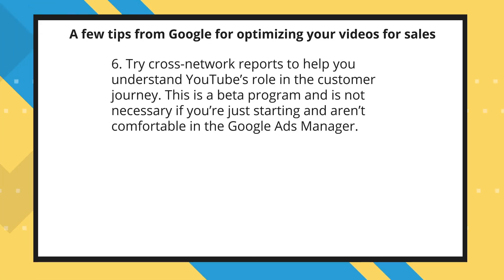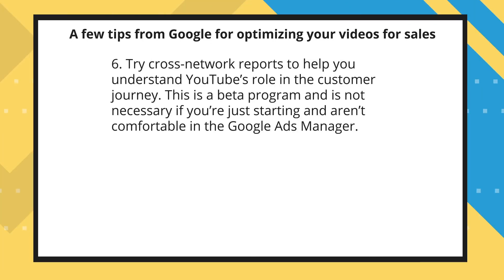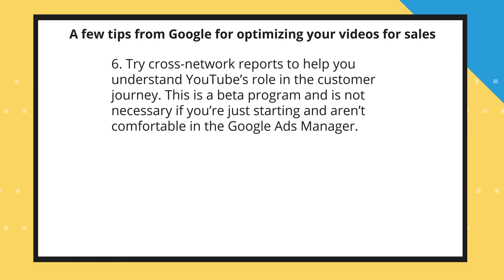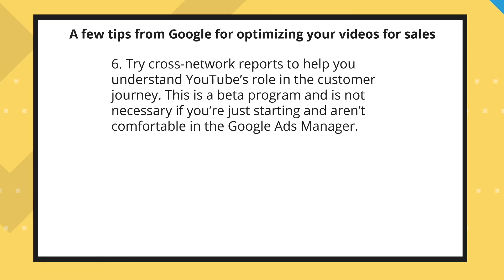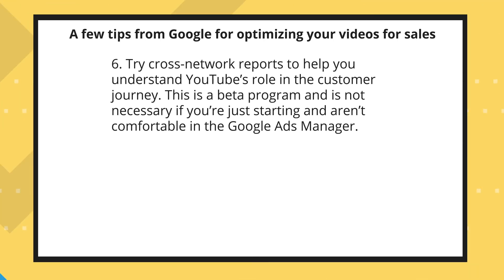My fifth tip is to try cross-network reports to help you understand YouTube's role in the customer journey — this is a beta program, so it's not necessary, and if you're just starting out it might be uncomfortable to use, so it's optional. And use audience expansion, which can help you reach 20% more conversions at a similar CPA — cost per action — to your original audience.